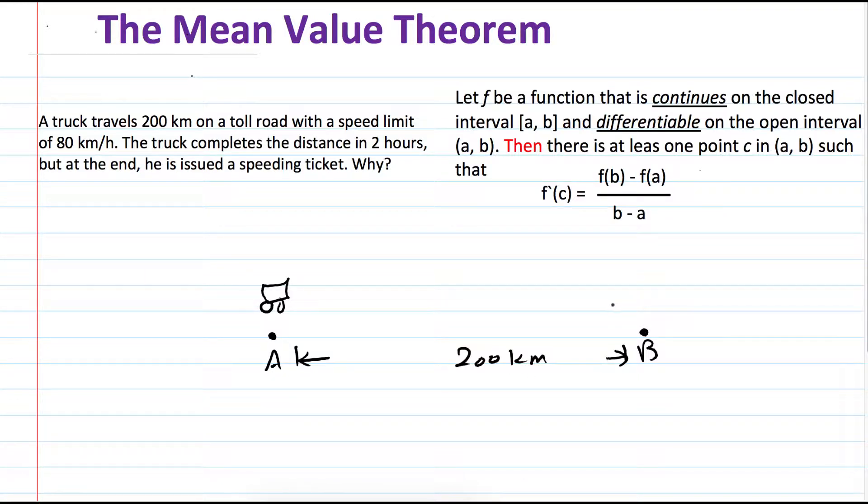He reaches this point and he makes this distance in two hours. So from here to here, he makes it in two hours. And the speed limit is 80 kilometers per hour.